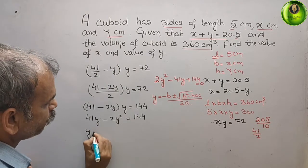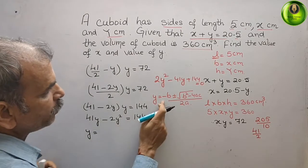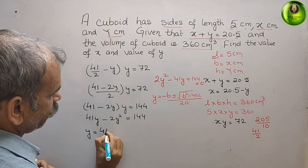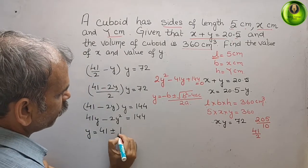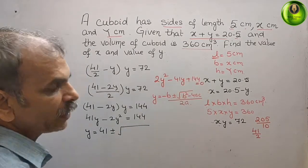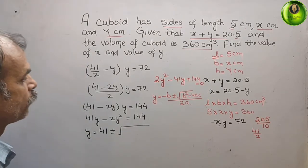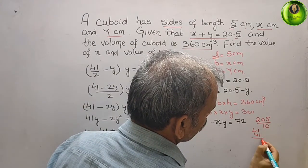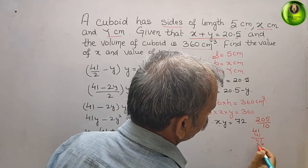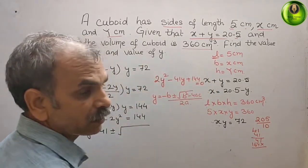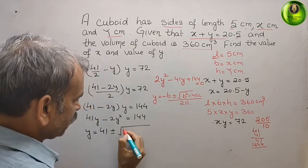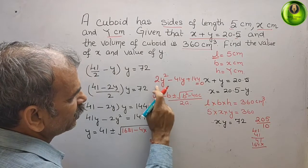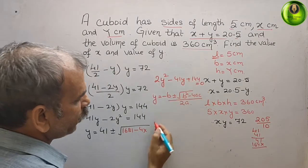Substituting the values: y equals minus of minus 41, which is 41, plus or minus root over 41 squared minus 4ac. 41 squared is 1681, and 4ac equals 4 times 2 times 144, which is 288 multiplied by... giving us 1681 minus 1152, all divided by 2a, which is 4.